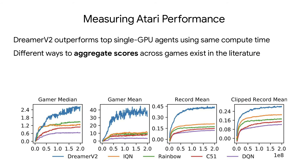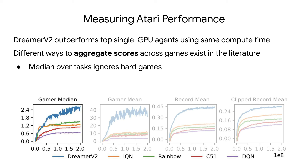We evaluate DreamerV2 on the standard benchmark of 55 Atari games, trained for 200 million frames each, where it outperforms top single GPU agents using the same computational budget. There exist different ways to aggregate scores across games in the literature. The score of each game is usually normalized so that zero corresponds to random actions and one corresponds to the performance of a human gamer, and then the median over tasks is reported.